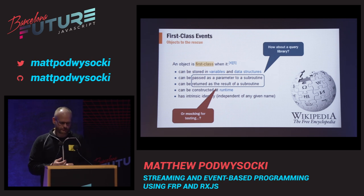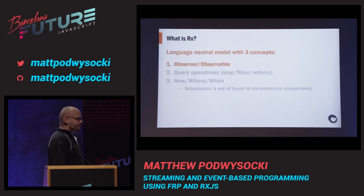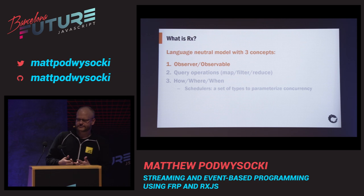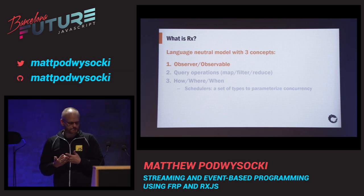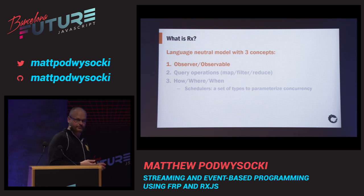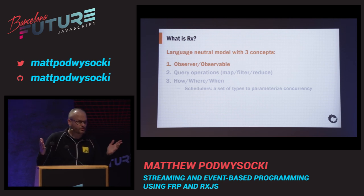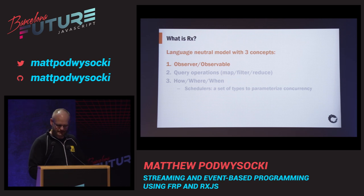For observables, you absolutely can swap them because it's wonderful for testing — and I'll show you exactly how. We have 1,800 unit tests for this library. Yes, it sounds like a lot, but asynchronous programming is annoying and hard. So Rx has three main concepts: the observer and the observable, query operators like map, filter, and reduce that you're already used to if you're using ES5 array extras — you already know how to do this. And finally, schedulers, which are probably one of the more interesting parts.